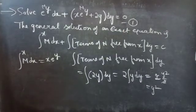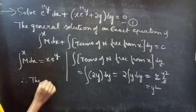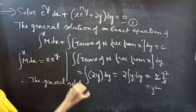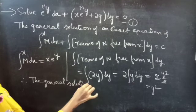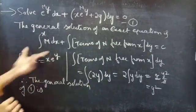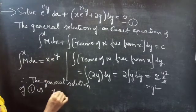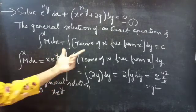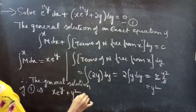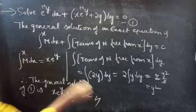Coming to the solution of the given differential equation: the general solution of equation 1 is the result from the first integral plus the result from the second integral, giving x into e power y plus y squared equals constant c.